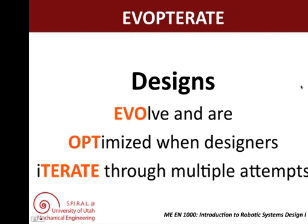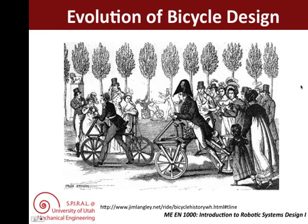First, let's look at how designs evolve as various models are built, tried, found wanting, and then new ideas are generated. Consider the evolution of bicycle design. Baron von Dreyer invented the running machine, or Lauf machine, in 1817. The English version was called the hobby horse. These featured two inline wheels and the ability to steer.